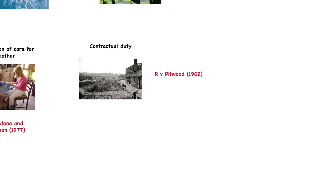The third type is contractual duty. A person may incur criminal liability through failure to discharge a contractual obligation. The key case is Pittwood, 1902. Pittwood was a level crossing keeper who negligently left the crossing gate open, leading to the death of a carter whose cart was struck by a train. The principle was that the defendant had a duty to shut the gate, and his negligent failure to act led to conviction — he was guilty of gross negligence manslaughter.